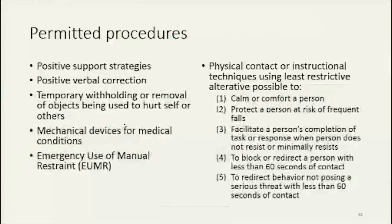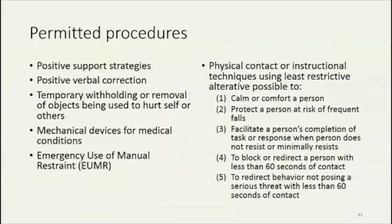Anything that is permitted under 245D is also permitted by the rule. Other permitted procedures include positive support strategies, positive verbal correction, and the temporary withholding or removal of objects being used to hurt self or others. A frequent question with 245D was whether or not a weapon could be temporarily removed — the rule clarifies that it can. Also permitted: mechanical devices for medical conditions; emergency use of manual restraint when it meets the required conditions; and physical contact or instructional techniques using the least restrictive alternative possible — to calm or comfort a person, protect a person at risk of falls, facilitate task completion when a person does not resist or minimally resists, to block or redirect a person with less than 60 seconds of contact, and to redirect behavior not posing a serious threat with less than 60 seconds of contact.